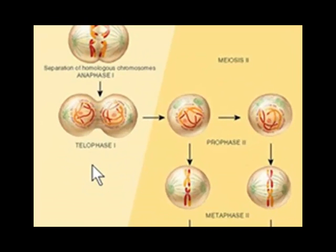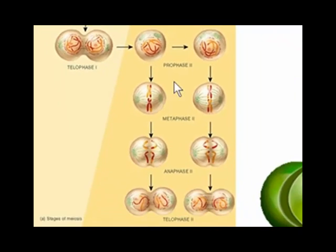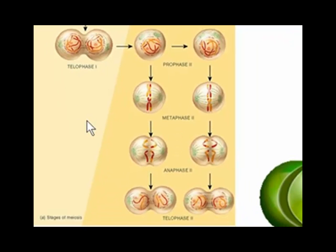So the result from the first phase of division, meiosis one, is two different haploid cells. Each of those two cells is now going to go through a second phase of division. And the second phase of division is just like mitosis. There's no more crossing over. The chromosomes line up single file and they each have chromatids.